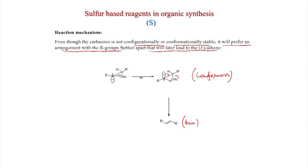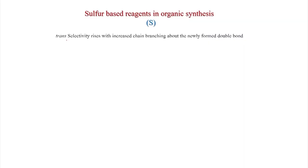On the other hand, the conformer where the anion and OAc are on the same side requires rotation so the negative charge goes to the trans position; when R′ comes to the same side as R after rotation, elimination gives the cis alkyl. This is very important in Julia olefination: even though two conformers are possible, steric effects make the trans alkyl the major product. Trans selectivity increases with increased chain branching about the newly formed double bond.